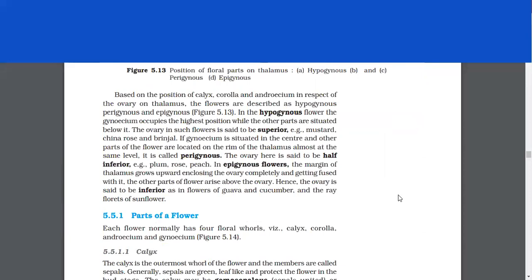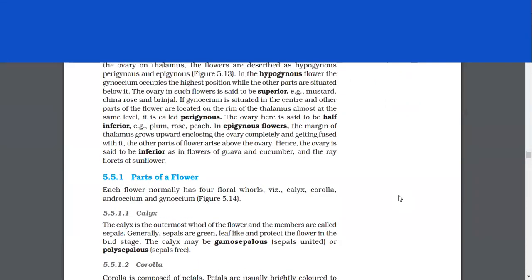Based on the position of calyx, corolla and androecium in respect of the ovary on thalamus, the flowers are described as hypogynous, perigynous and epigynous. In the hypogynous flower, the gynoecium occupies the highest position while the other parts are situated below it. The ovary in such flowers is said to be superior, for example, mustard, china rose and brinjal.